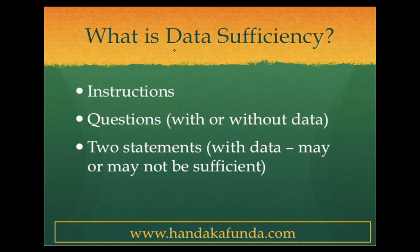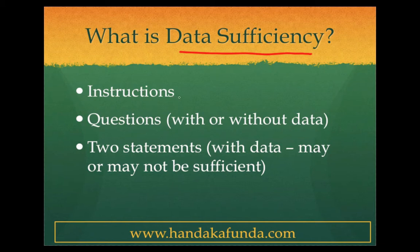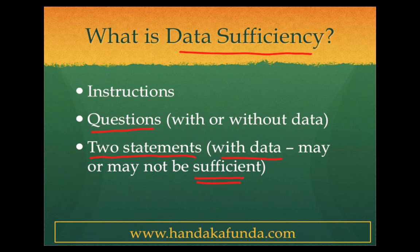The first part is what exactly is data sufficiency. A data sufficiency question will consist of three parts. The first part will be the instructions, which will tell you what to mark. There will be some information given in the question, and based upon that you will have to mark one or two or three or four, or maybe it is a five-option thing. It will also include a question, which can be with or without data. It will also include two statements which will have data. The key is: is the data sufficient enough to answer the question? It may be sufficient. It may not be sufficient.